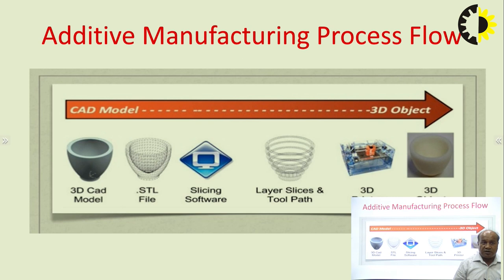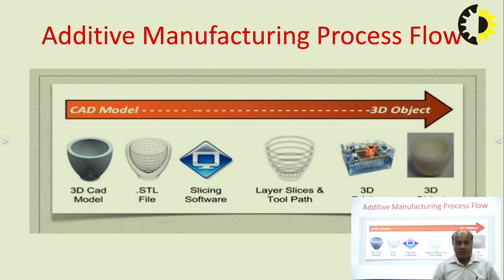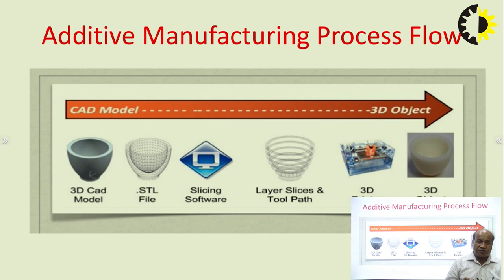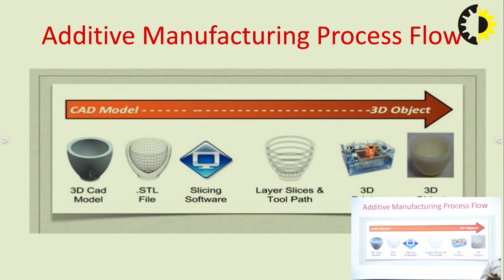We can describe the additive manufacturing process flow from the CAD model to the final 3D object. First, we create the 3D CAD model — you can see it on the left side. Then it is converted into an STL file, which is a triangulation of the surfaces of the 3D CAD model. Then we slice it using slicing software, generate the toolpath file, and upload it into the 3D printer to print the final 3D object.